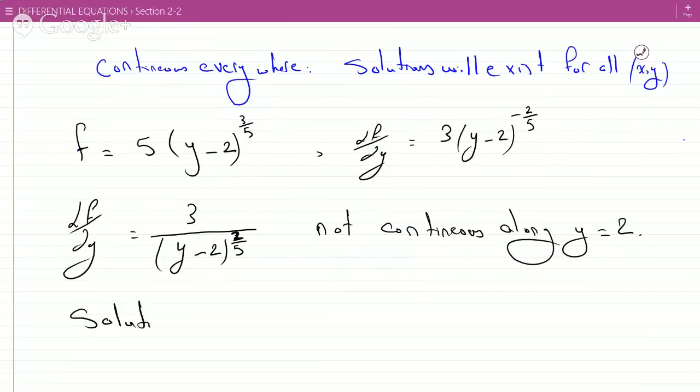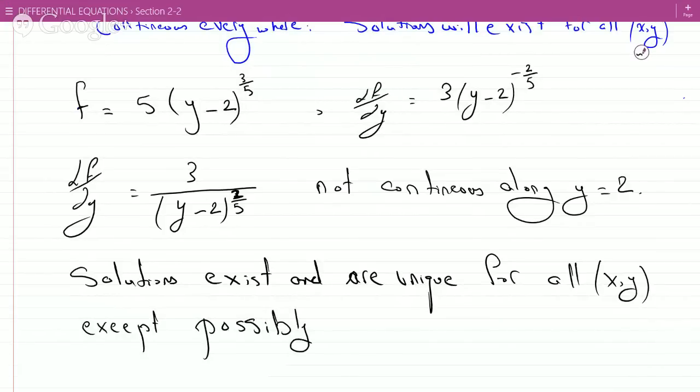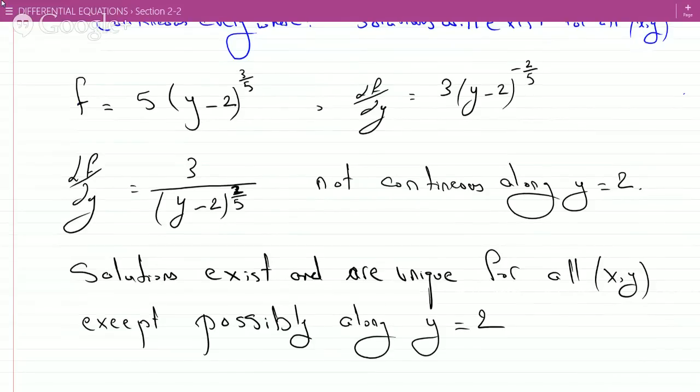So solutions exist and are unique for all (x,y) except possibly along y equals 2, since ∂f/∂y is not continuous along y equals 2.